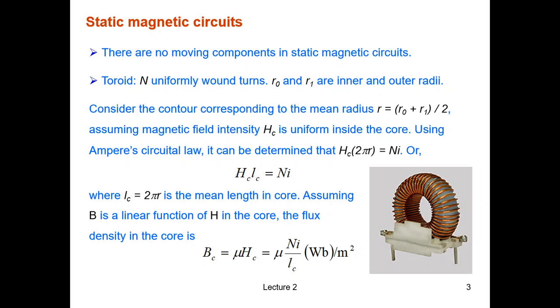Let's consider a contour corresponding to the mean radius r. We assume the magnetic field intensity is uniform inside the core. Applying the Ampere circular law, it can be determined that Hc multiplied by the peripheral of that mean radius, that mean contour, is equal to the total of magnetic motive force which is Ni. We are supplying a current i and it's going through the core n times. So the total number is Ni, and 2πr equals Lc is called the mean length in the core.